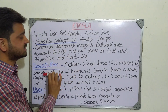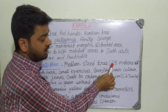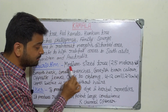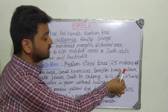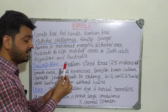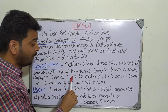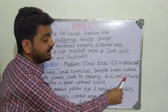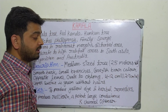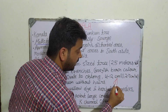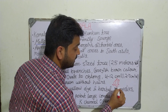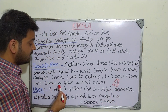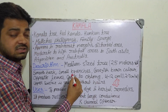Coming to the botanical description of the Kamala plant: it is a medium-sized tree, up to 25 meters tall, with smooth bark and small branches that are gray to brown in color. The leaves are opposite, ovate to oblong in shape, 4 to 12 centimeters in length and 2 to 7 centimeters in width. The upper surface is green without hair.